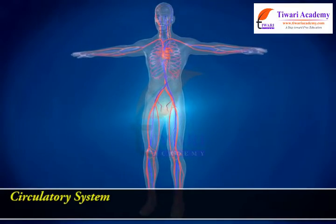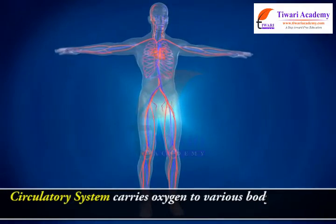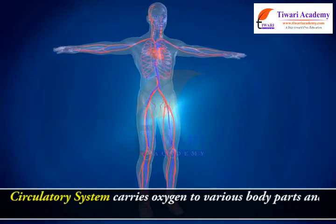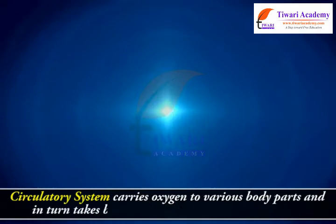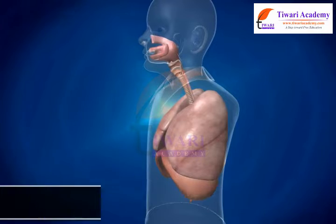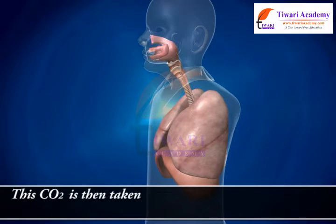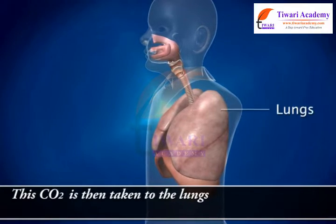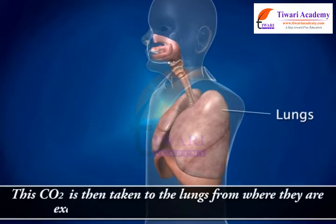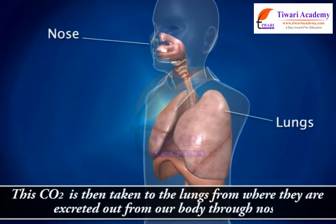The circulatory system carries oxygen to various body parts and in turn takes back carbon dioxide that has no use in our body. This carbon dioxide is then taken to the lungs, from where it is excreted out from our body through the nose.